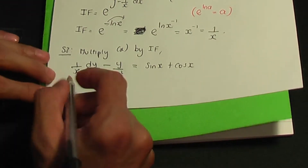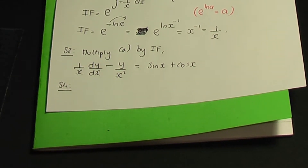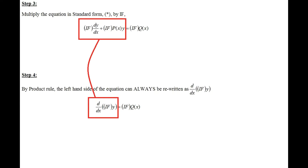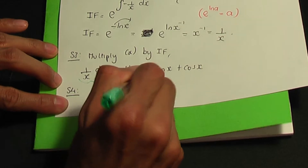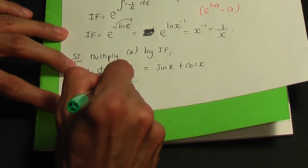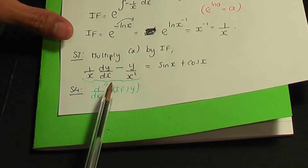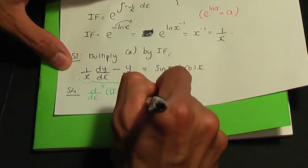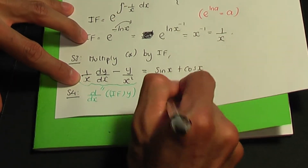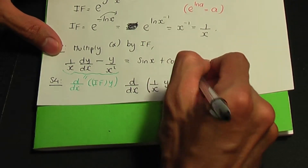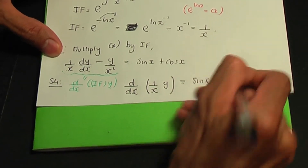Step number 4: the left-hand side of the step 3 equation is always rewritten as d/dx of (IF · y). So we rewrite it as d/dx(y/x) = sin x + cos x.